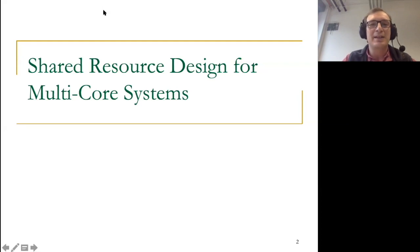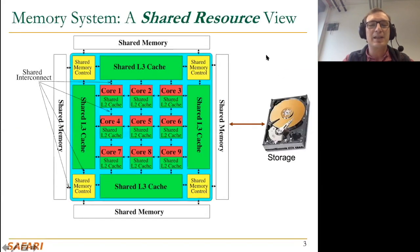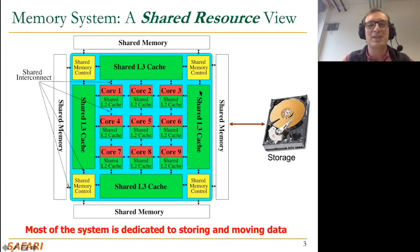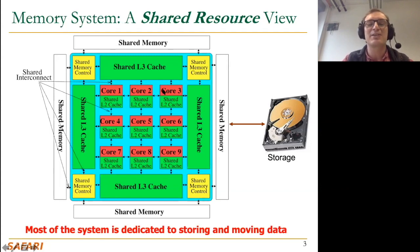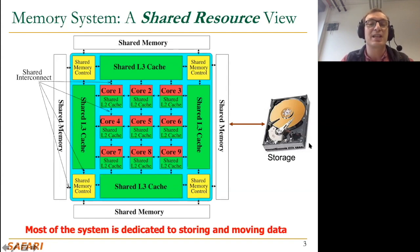Let me motivate the need for this. If you look at the memory system, it's a huge shared resource. Most of the system we design today is dedicated to storing and moving data. On top of that, most of that system is really shared across different agents, whether they be cores, accelerators, GPUs, CPUs, machine learning accelerators, video encoders or decoders. Some levels of caches, memory controllers, interconnect, and shared memory storage — basically, most of the memory system is really a shared resource.